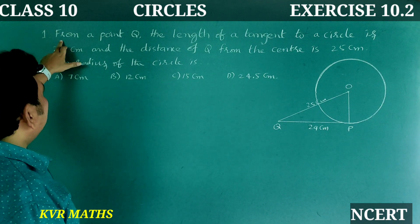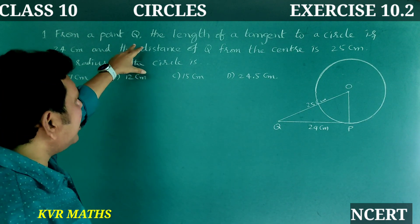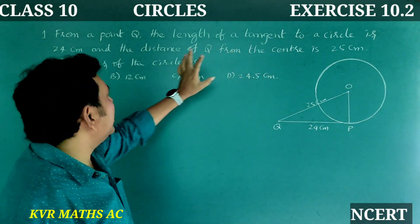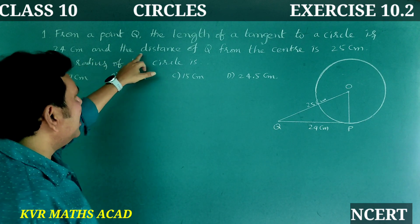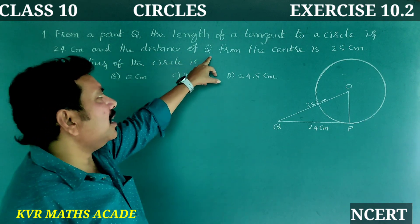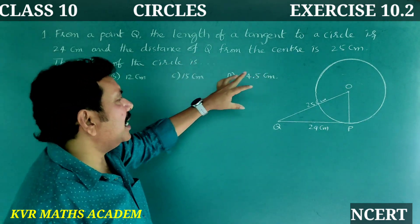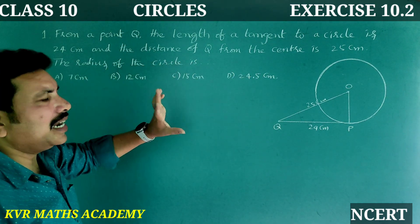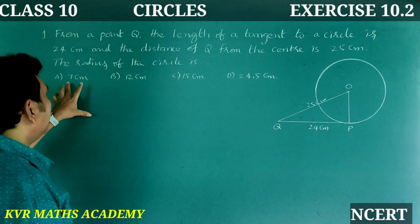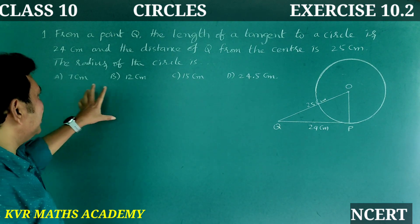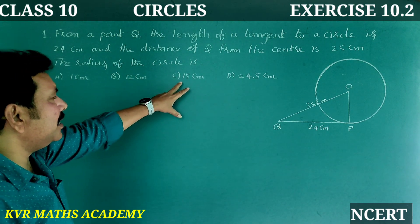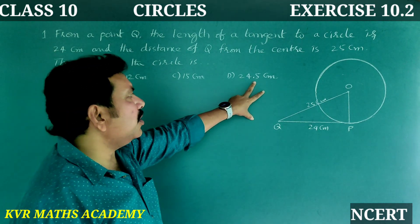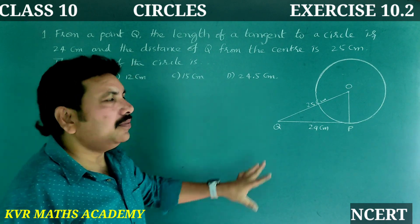This is the first question. From a point Q, the length of the tangent to a circle is 24 cm, and the distance of Q from the center is 25 cm. The radius of the circle is — with four options: 7 cm, 12 cm, 15 cm, and 24.5 cm.